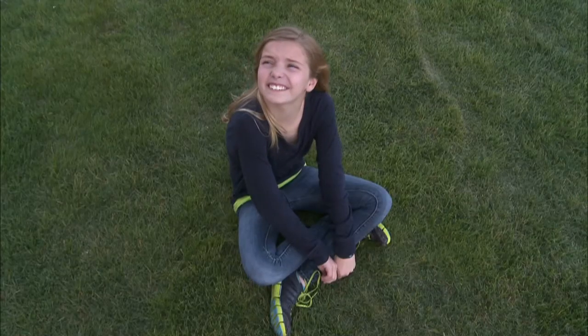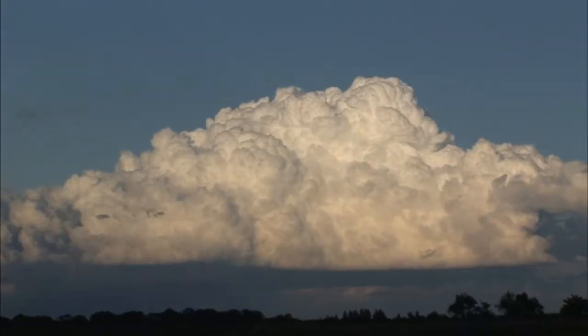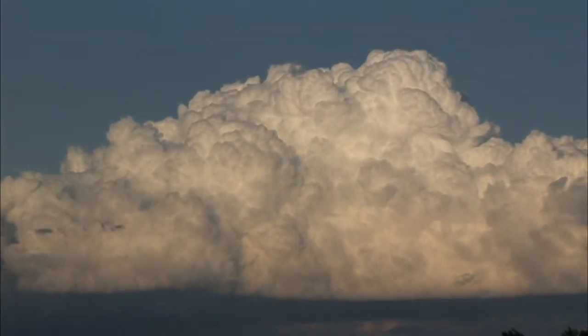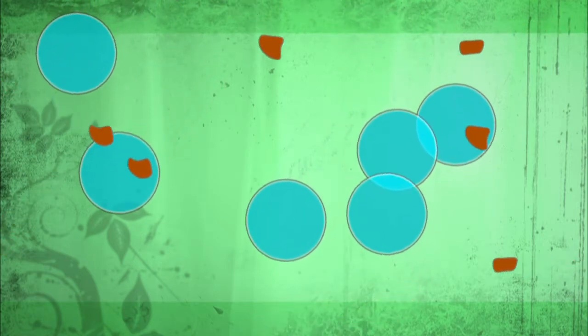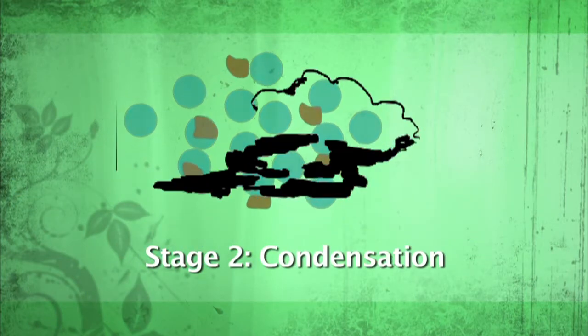Have you ever looked at the sky and wondered, where do all those clouds come from? Well, they're an important part of the water cycle. As wind and air currents push the water vapor through the atmosphere, it joins with other water molecules and dust particles. And when the air cools, they all begin to condense together into clouds.